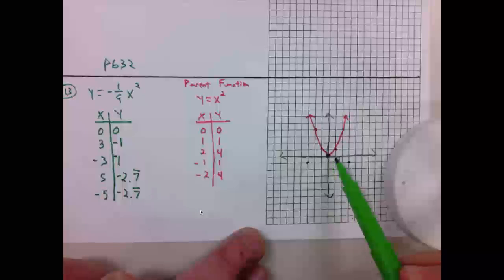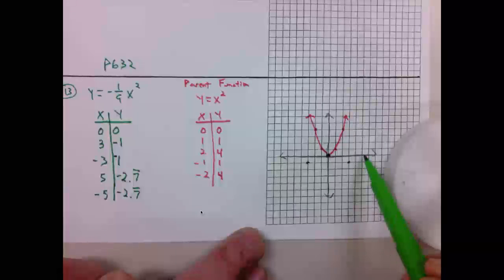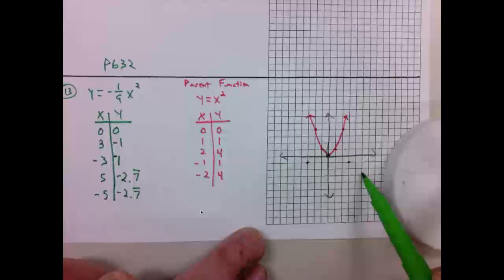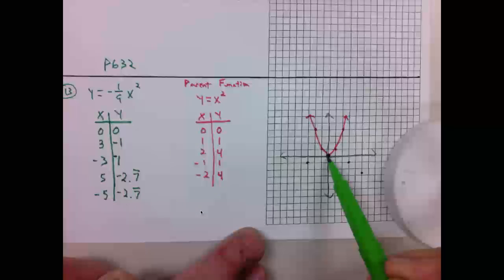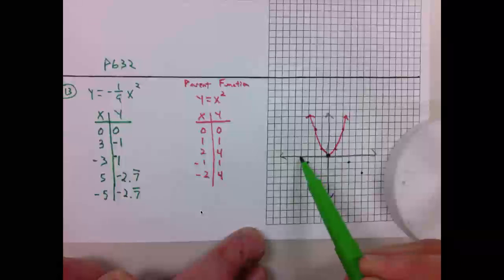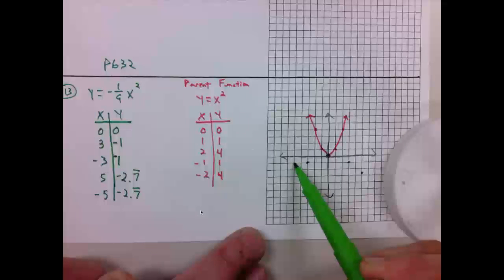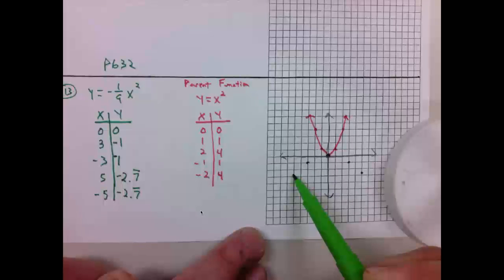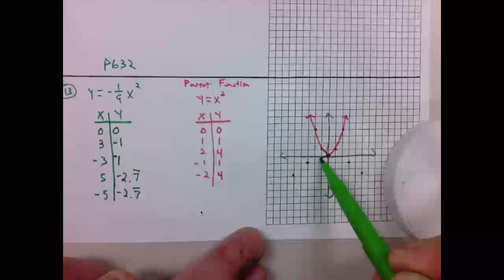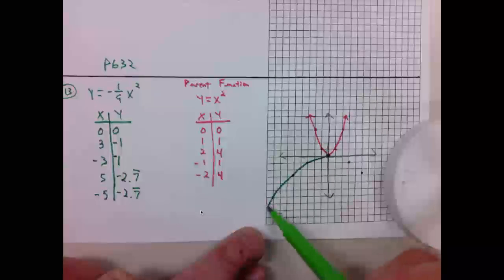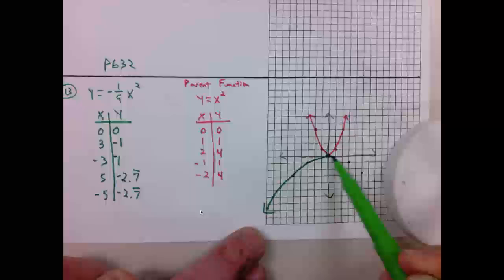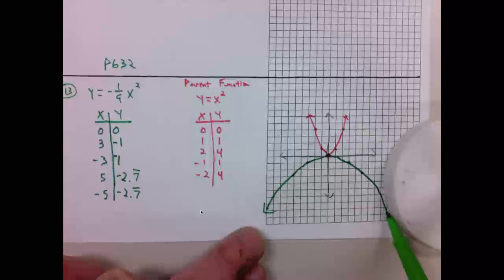So positive 5, and then almost negative 3, negative 1, negative 2 right there. Negative 5, almost negative 3. So we can see this new parabola is much wider than the previous one.